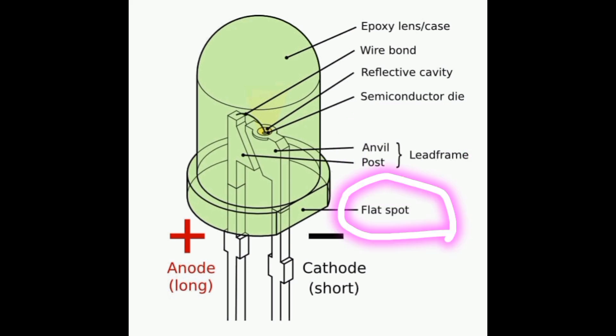Flat spot. The flat spot on the LED package serves as a reference point for proper orientation during installation. It indicates the location of the cathode negative terminal of the LED. This usually helps when the LED terminals are broken to equal height.